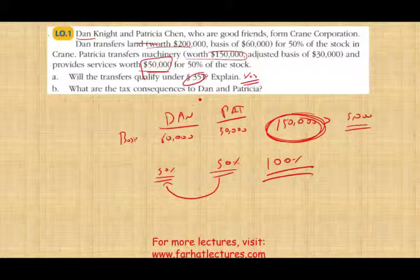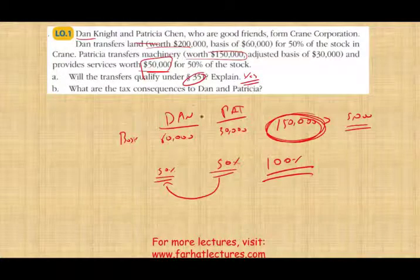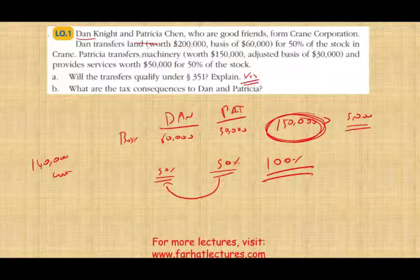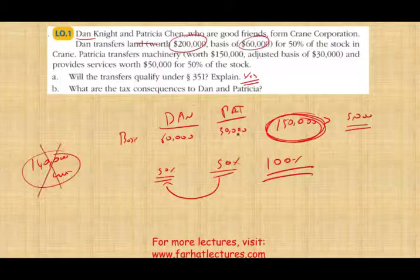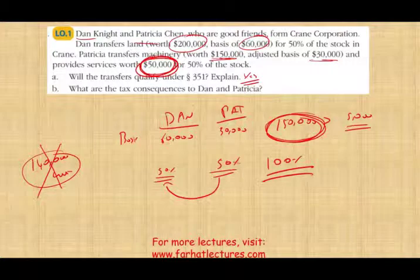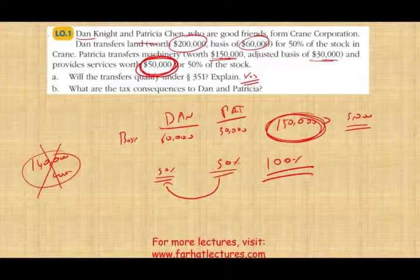What are the tax consequences? For the property, there is no gain for either Dan or Patricia — Dan would have had a $140,000 gain ($200K − $60K basis) and Patricia a $120,000 gain ($150K − $30K basis), but those are not recognized under Section 351. However, Patricia will still have $50,000 of ordinary income from the services she provided, because services are always taxable.